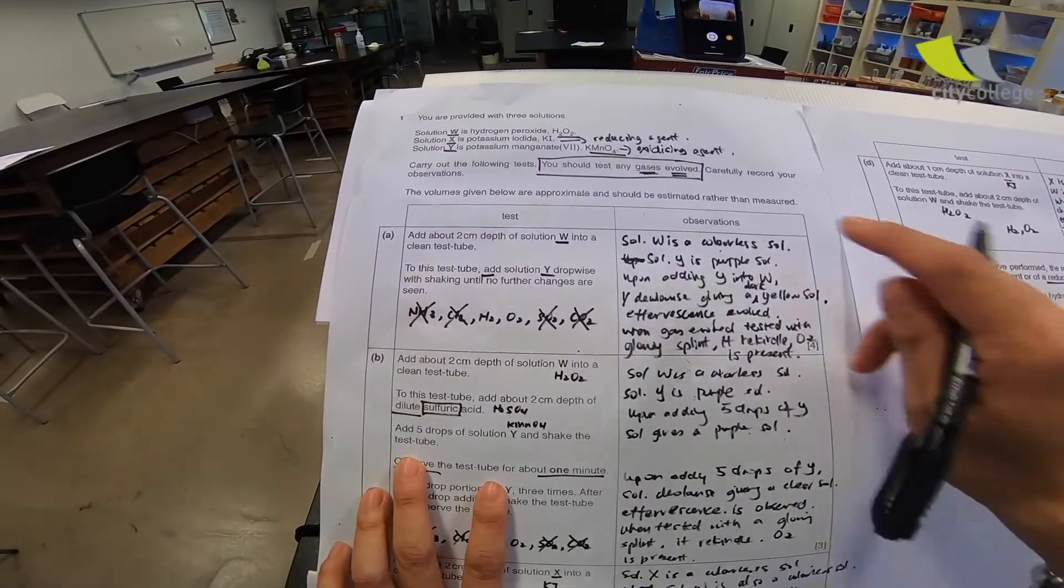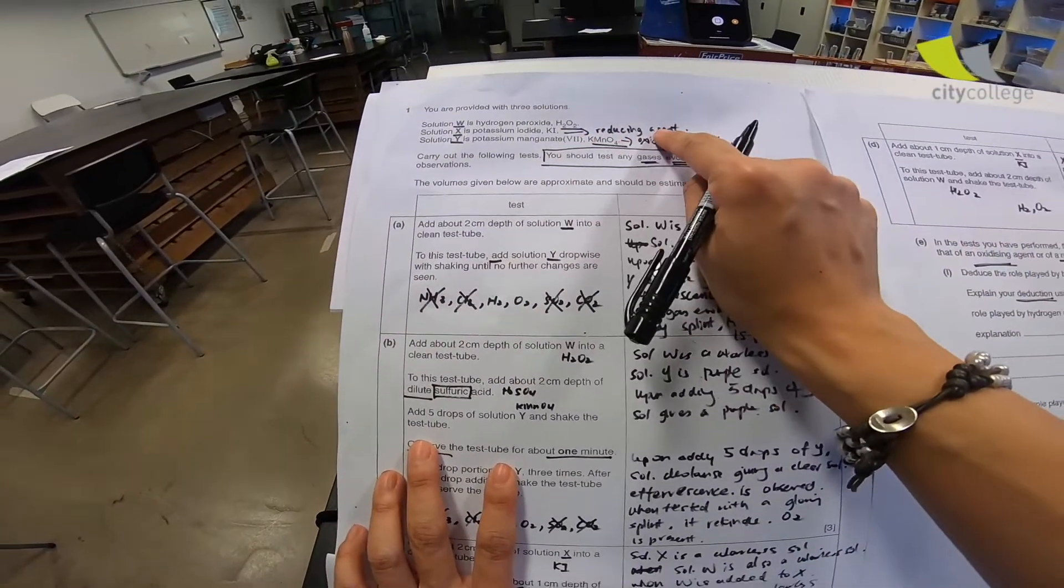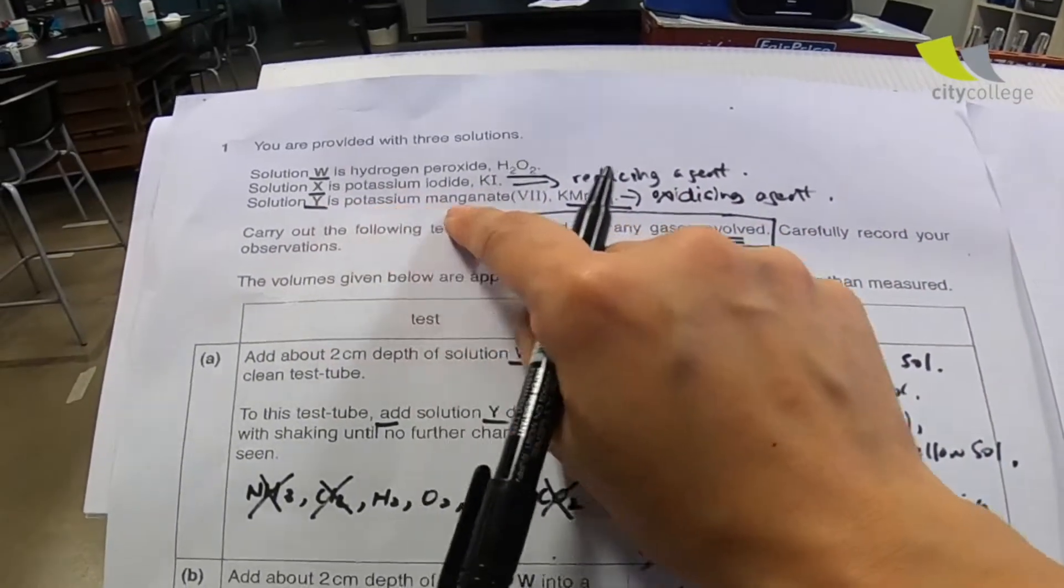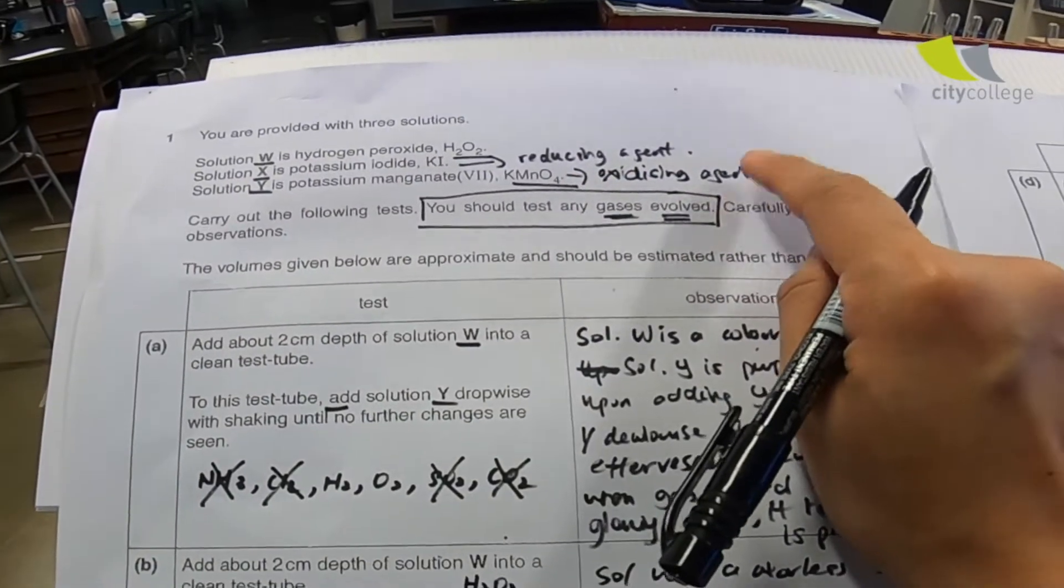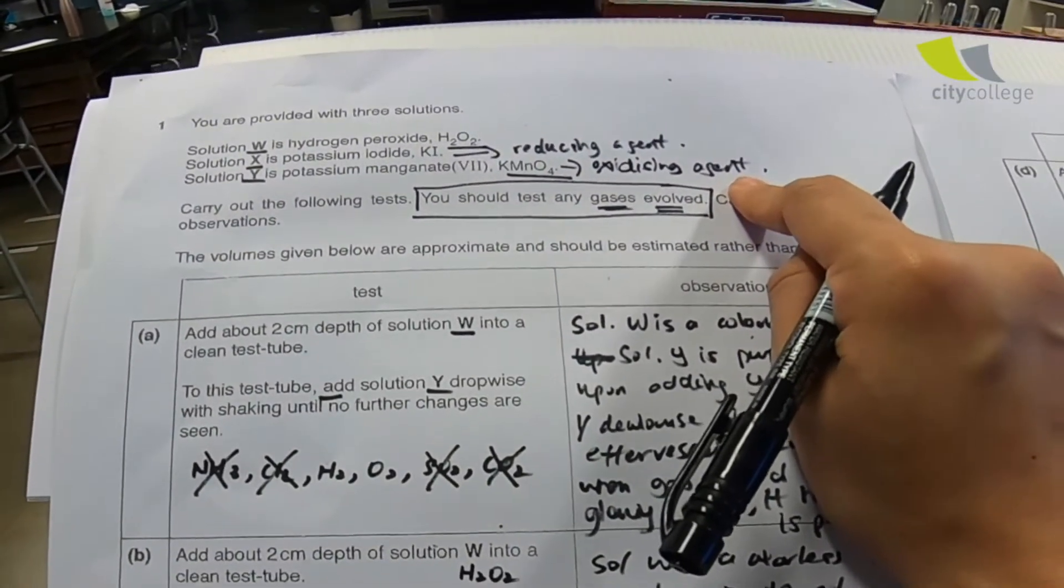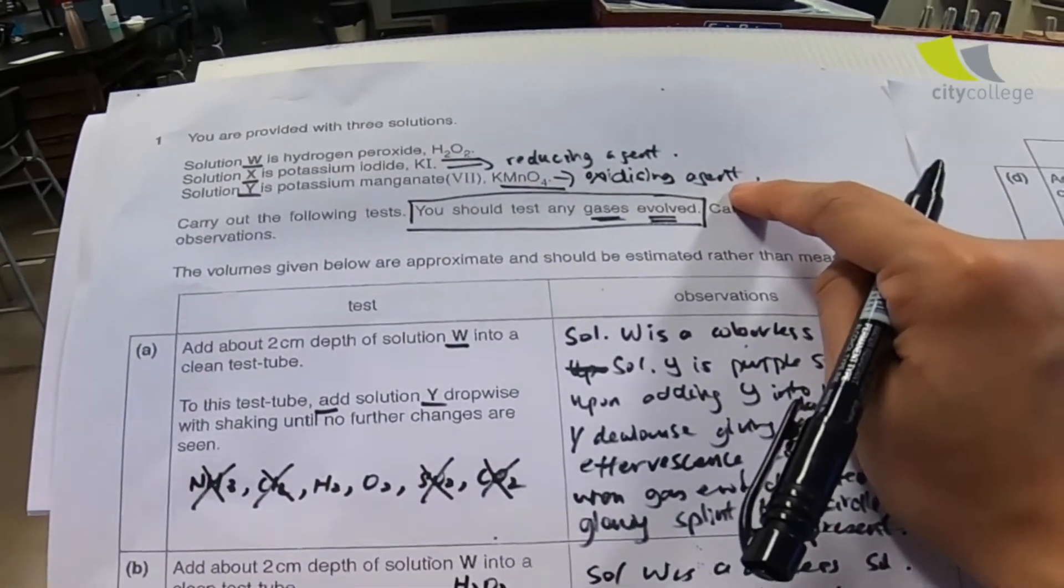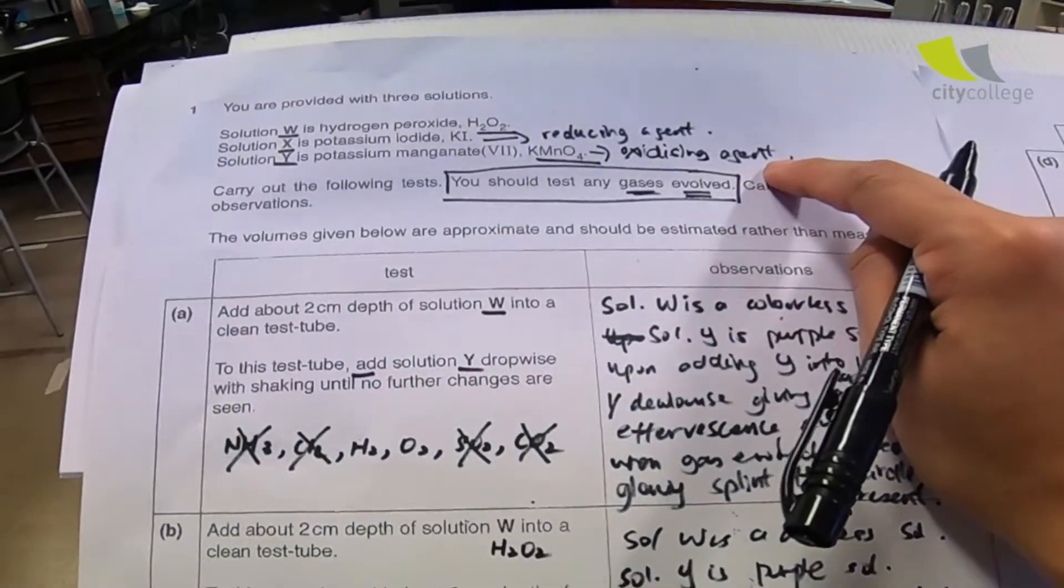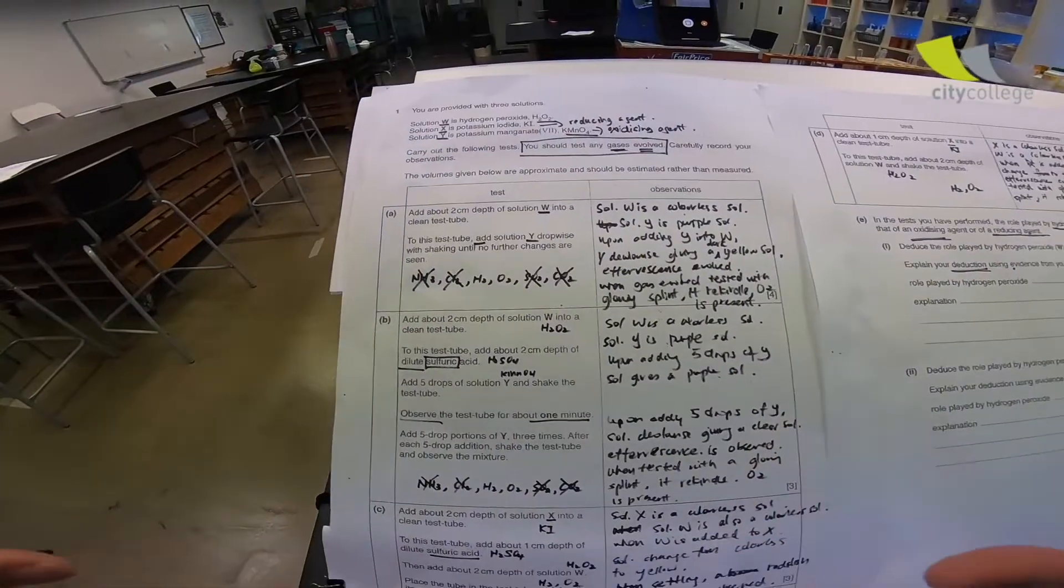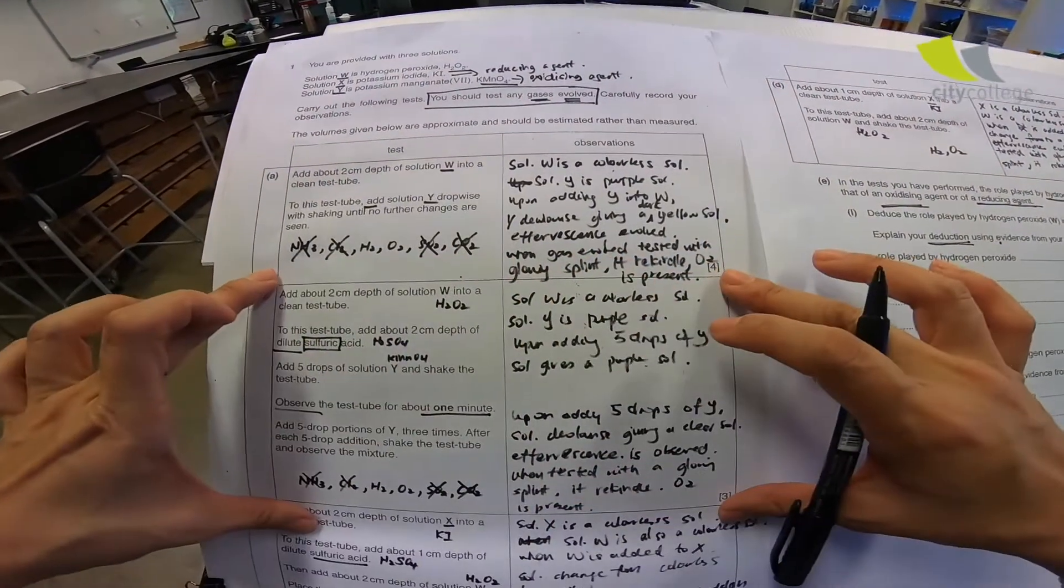Now, if you're good with chemistry, you should have already known that KI is a reducing agent and potassium manganate is an oxidizing agent. In which topic? Redox. As I always emphasize that before your practical exam, these are some of the few topics that you have to study. Redox is one of them.